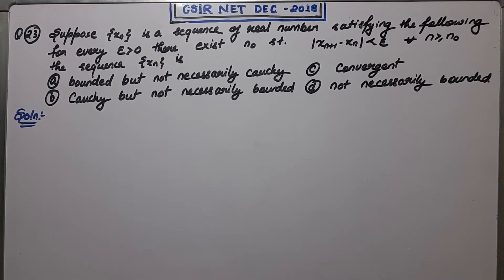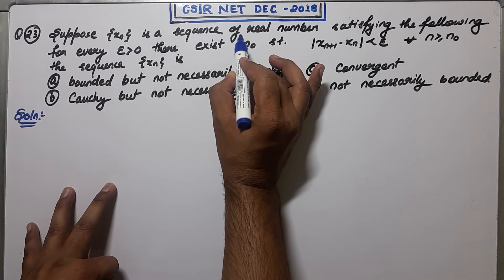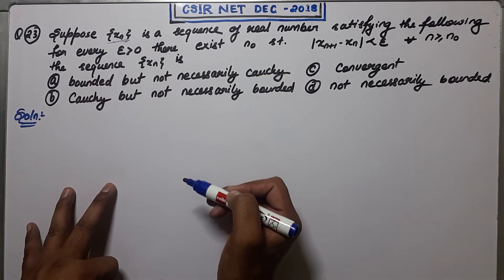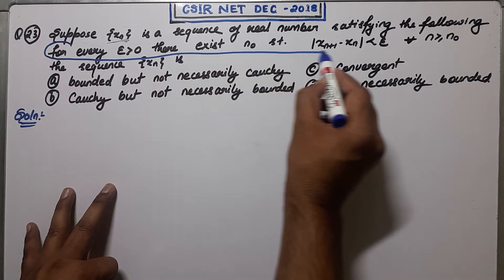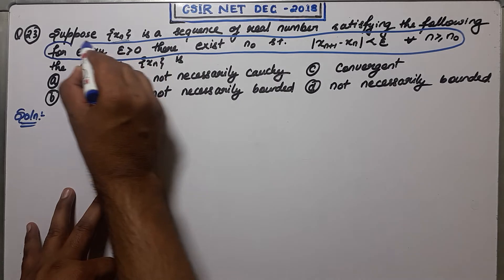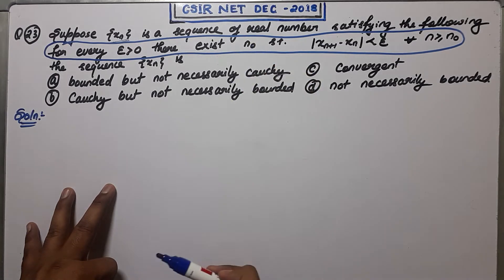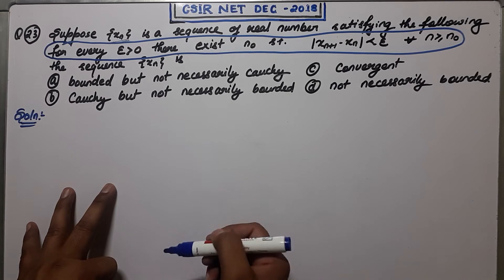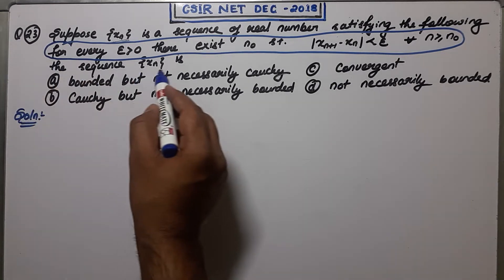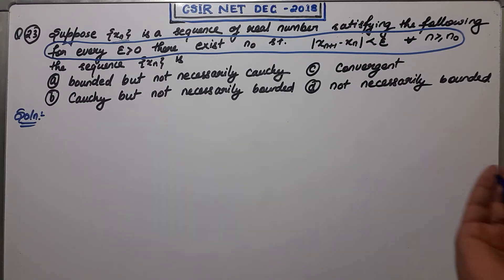Welcome guys, this is the 23rd question of NET December 2018, from Part B of the question paper. Suppose x_n is a sequence of real numbers satisfying the following criteria: for every epsilon greater than 0, there exists n naught (a natural number) such that the difference between consecutive terms is less than epsilon for all n greater than n naught. We need to check whether the sequence is bounded, Cauchy, not Cauchy but not bounded, or not necessarily bounded.